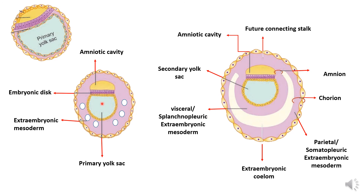The size of the yolk sac has been reduced. Also, in the primary yolk sac the cells were flattened, but now they have become cuboidal cells. As the extraembryonic coelom formed, it reduced the size of the primary yolk sac and the cells acquired a more cuboidal structure. We will no longer call it the primary yolk sac — we now call it the secondary yolk sac.